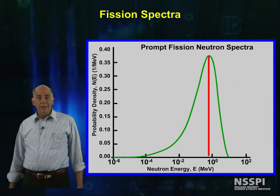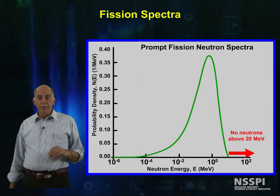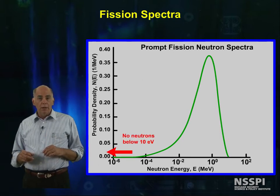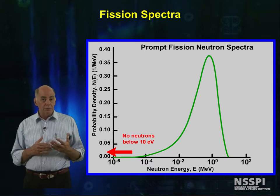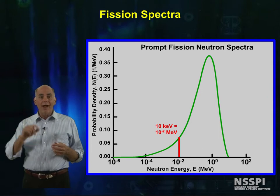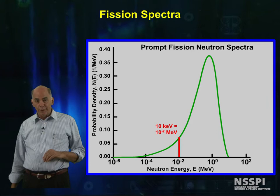Here's a graph of the neutron energy spectrum giving the probability of finding a fission neutron at a particular energy. You can see that the most probable energy is around 1 MeV, and essentially no neutrons are created above 20 MeV. There are also almost no fission neutrons created with energies below 10 KeV, and the curve rises rather sharply to its maximum starting at about 10 KeV.